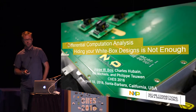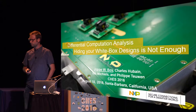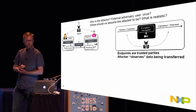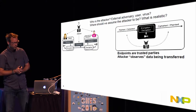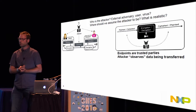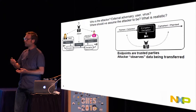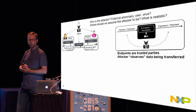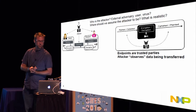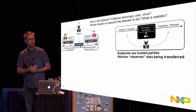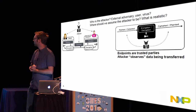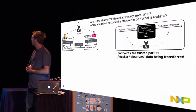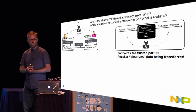Differential computational analysis can be seen as the software counterpart of the well-known DPA attacks from the gray box attack model. When you start to investigate the security of any implementation — hardware or software — it's good to ask yourself: who is the attacker and where is the attacker? It could be the user of the device, it could be a virus, it could be malware. It's good to establish these things if you want to show that something is secure.